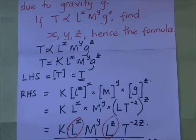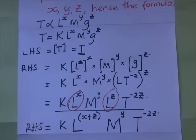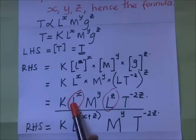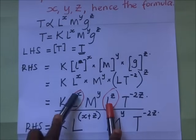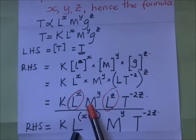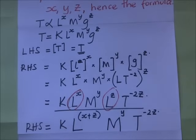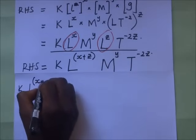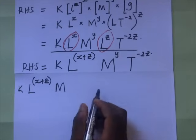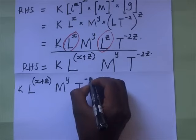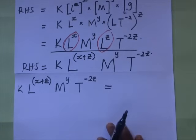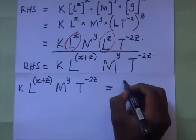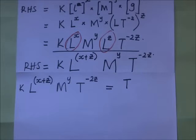We can now combine the L terms. Using the law of indices — same base, add the powers — the right-hand side becomes k · L^(x+z) · M^y · T^(−2z). So this is our right-hand side, and our left-hand side is [T]. Setting the right-hand side equal to the left-hand side: k · L^(x+z) · M^y · T^(−2z) = T.